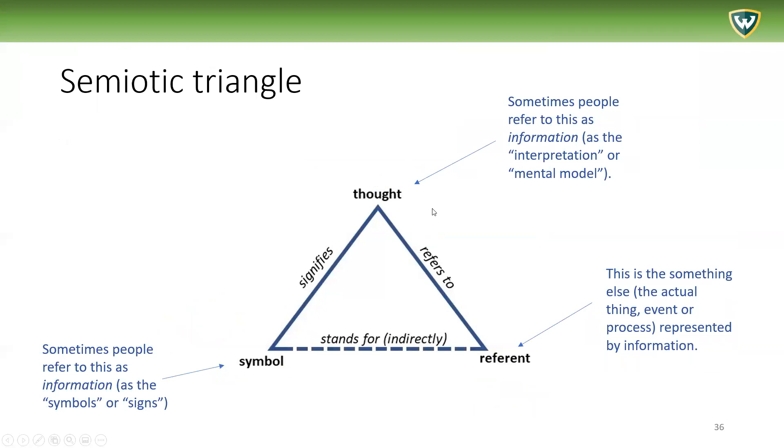So when we talk about information, bringing the concept of information here, sometimes people refer to this as information - just the symbol itself or the signs. Sometimes people think of this as the information - the mental model or the interpretation. And of course, the referent or the external object is the actual thing in the world that is being represented.